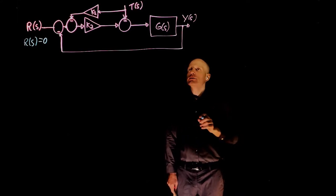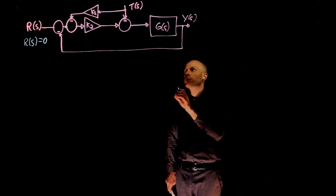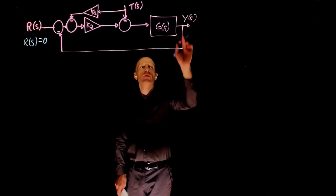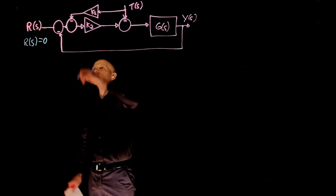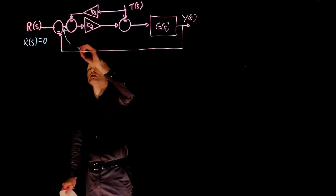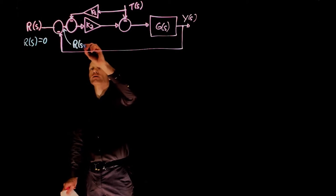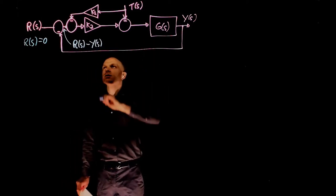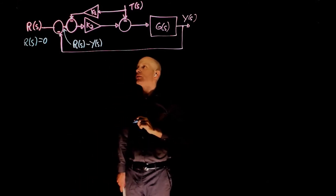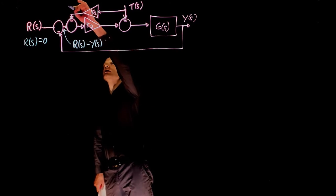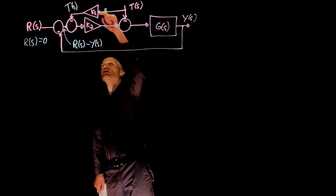We can start by identifying the signals at each point in this circuit. For instance, here we have Y and here we have R. So the signal right here is R minus Y. The signal here is T. The signal after this gain is then T times K1.